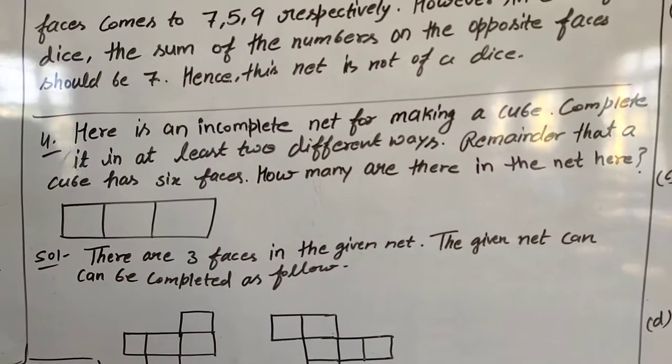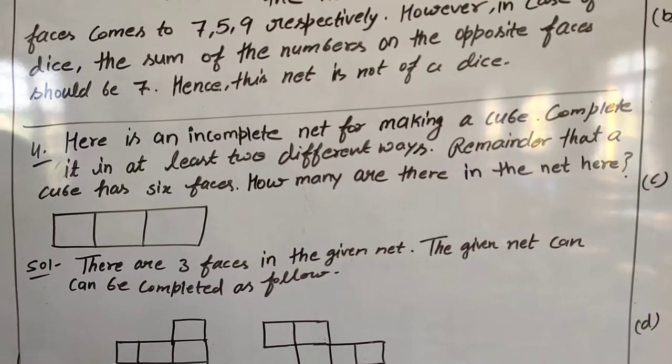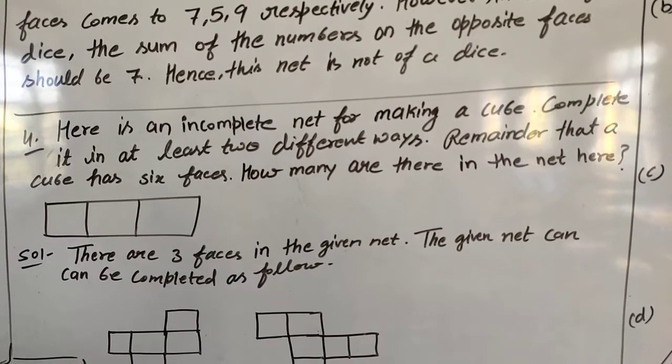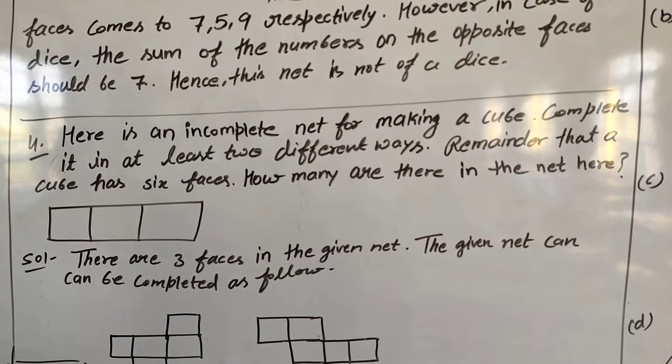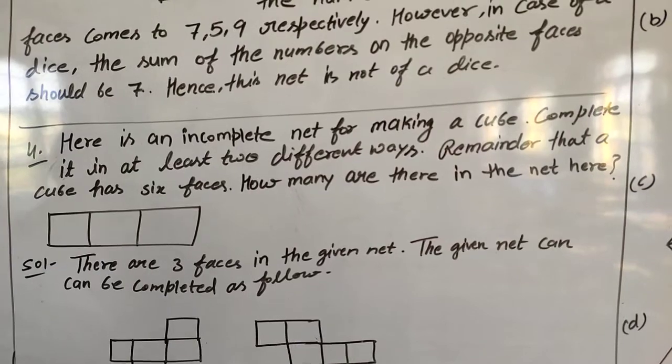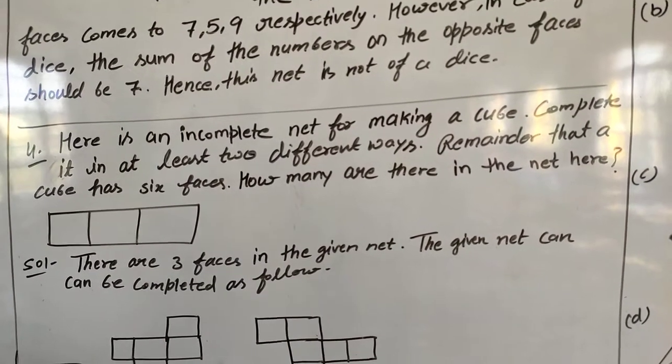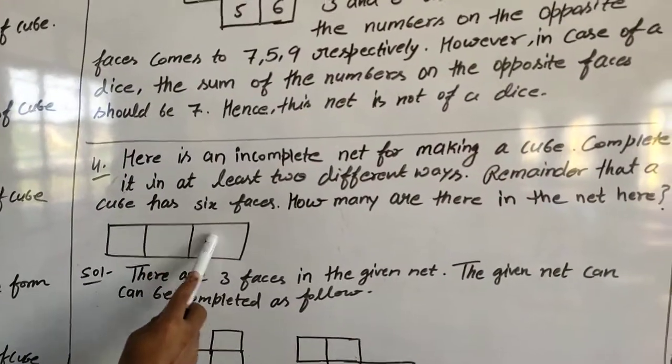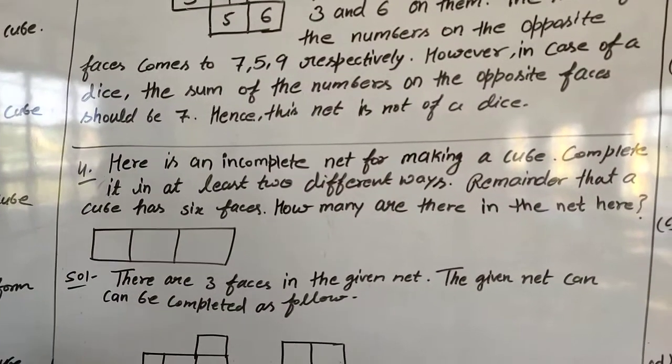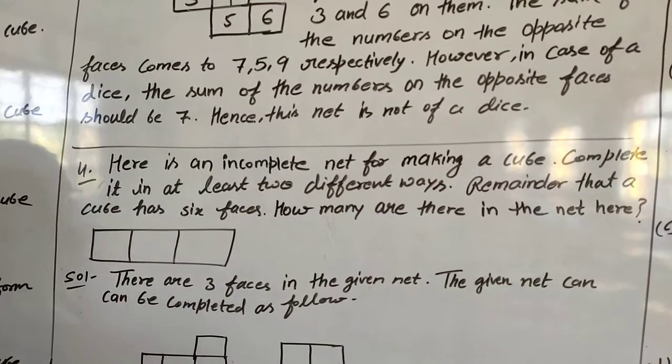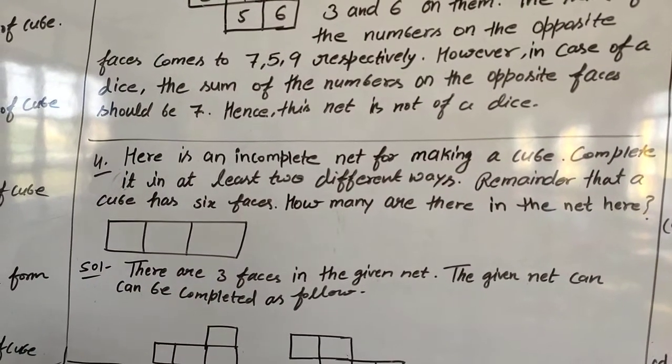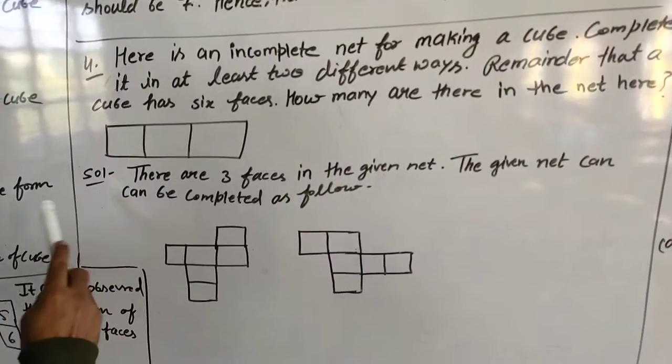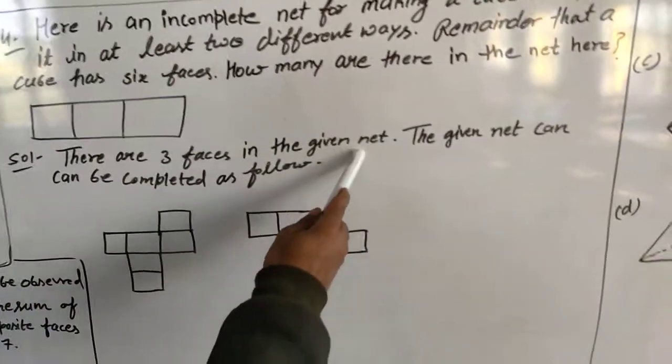Question number 4: Here is an incomplete net for making a cube. Complete it in at least 2 different ways. Remember that a cube has 6 faces. How many are there in the net? Here, there are 3 given. But we know there are 6 faces in a cube. There are 3 faces in the given net.